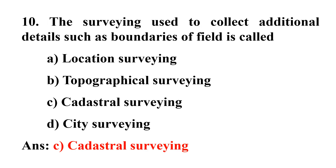The tenth question: The survey line used to collect additional details such as boundaries of a field is? Option A: location survey, Option B: topographical survey, Option C: catastral survey, Option D: city survey.